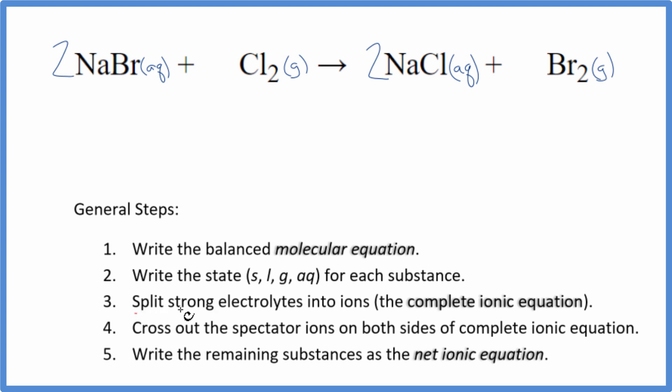Once we have the states, we can split the strong electrolytes into ions. That'll give us the complete ionic equation. So sodium on the periodic table is in group 1, has a 1 plus charge. The bromine, that is 1 minus. So two sodium ions. I won't write the states now. Let's do that at the end. Two bromine ions, Br minus.